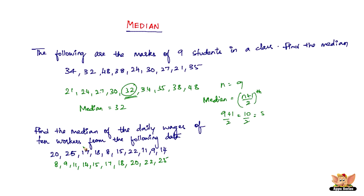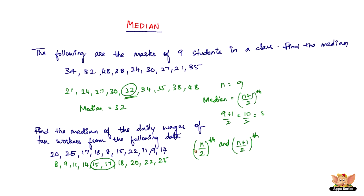Which is the middle value here? Let's first see the number of terms: 1, 2, 3, 4, 5, 6, 7, 8, 9, 10. It's 10 — you cannot find exactly the middle. The median is nothing but the arithmetic mean of the two central terms. So 15 and 17 are the two central terms. The median is the mean of the n/2 th and (n/2 + 1)th values.